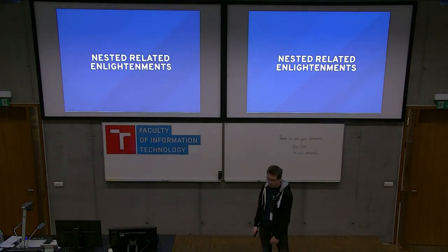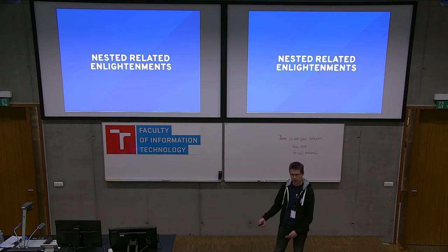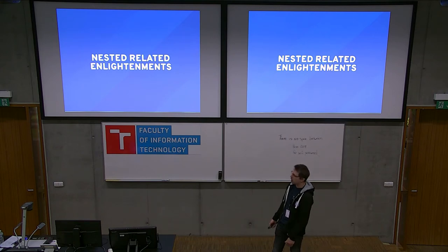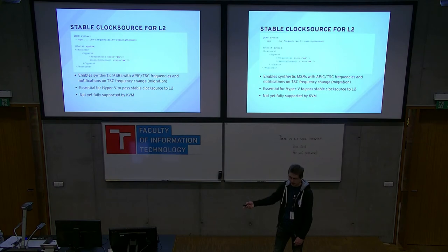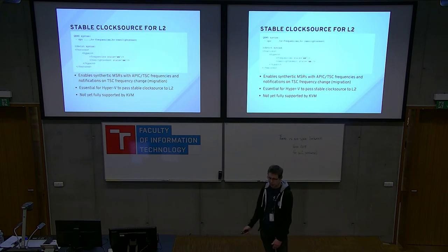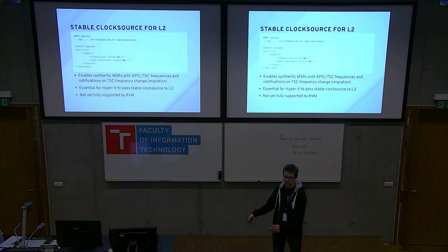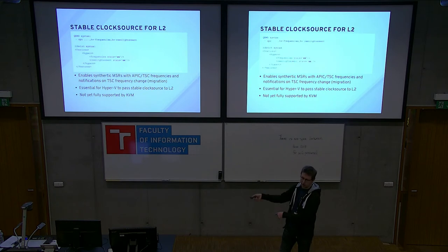If you're running nested environments — like Hyper-V with its guests on KVM — or using Windows security features that automatically enable the Hyper-V role, you may need a few more enlightenments. First, you may want a stable clock source in your level-two guests. If you're running Hyper-V on KVM, Windows is your level-two guest. For that you need two enlightenments: Hyper-V frequencies, which tells your guest the exact frequency of the APIC timer; and Hyper-V reenlightenment, which handles live migration — when your level-one guest migrates, it needs to update level-two guest clock sources.